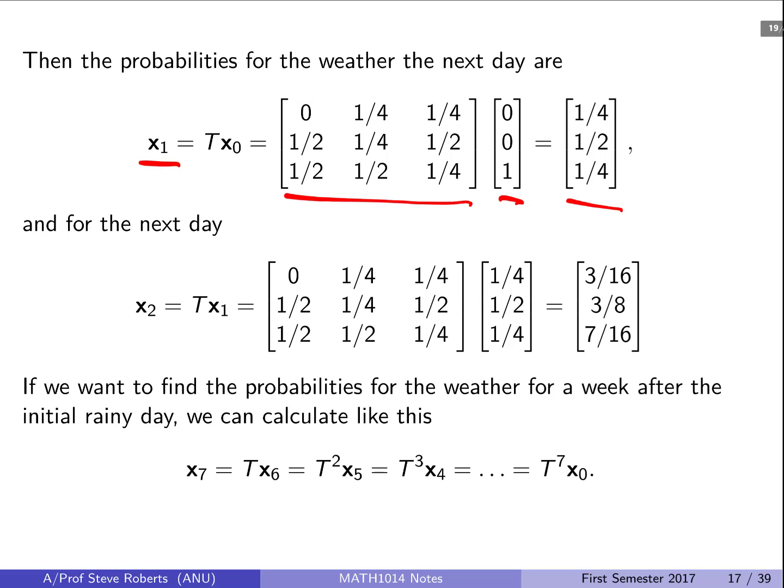We do this again. So we calculate what x2 is. We get this distribution: 3 over 16, 3 eighths, 7 sixteenths, which by the way have to add up to one, the components.